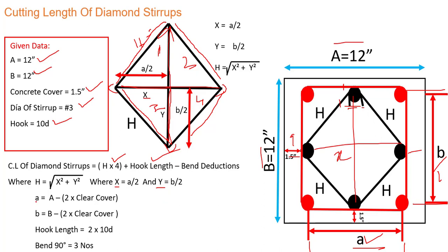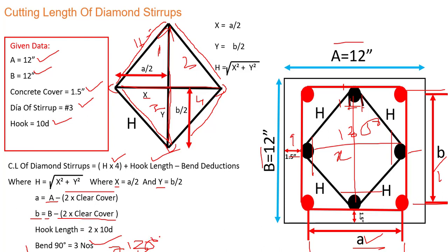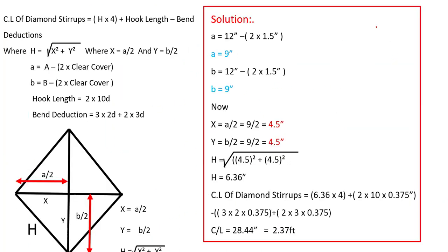To find small a, we deduct concrete cover from both ends of the large A. Same for small b — deduct concrete cover from both ends of large B. The hook length is 2 × 10d (two hooks). For bend deductions, we have three bends at 90 degrees and two bends at 135 degrees, giving a total of five bends.